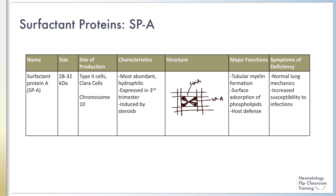Surfactant protein A is responsible for many roles including tubular myelin formation and surface adsorption of phospholipids. Adsorption is the adhesion of an extremely thin layer of molecules to the surfaces with which they are in contact. This is in contrast to absorption, which occurs when a substance is gradually taken up, as when water is absorbed by a sponge.